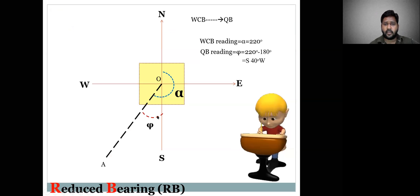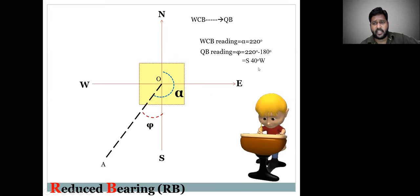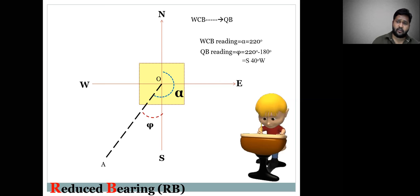For example, if the Whole-Circle Bearing angle theta is 220 degrees and I want to find the Reduced Bearing: since north to south is 180 degrees, 220 minus 180 gives South 40 degrees West — meaning in the southwest quadrant, the angle is 40 degrees. So the Whole-Circle Bearing of 220 degrees is represented as South 40 degrees West in Reduced Bearing. You can convert Whole-Circle Bearing to Reduced Bearing and vice versa.